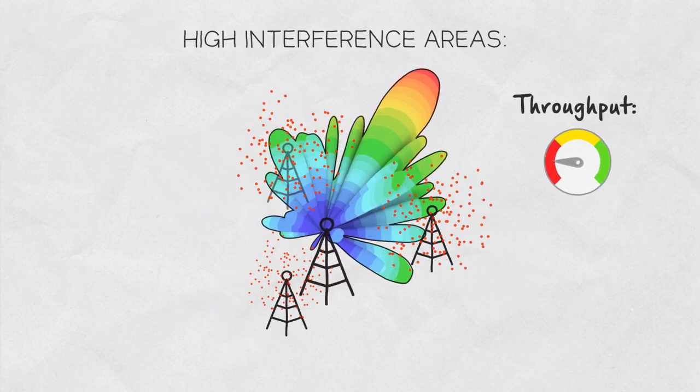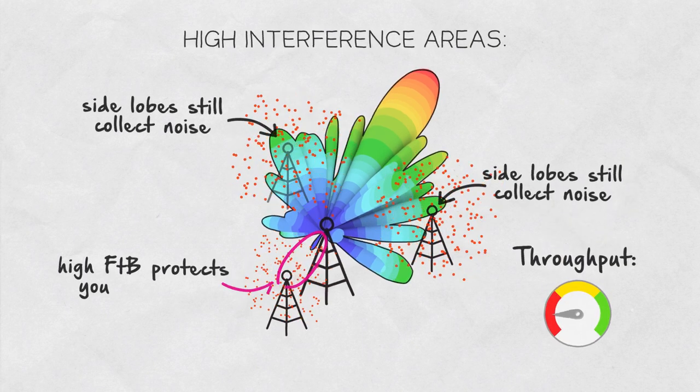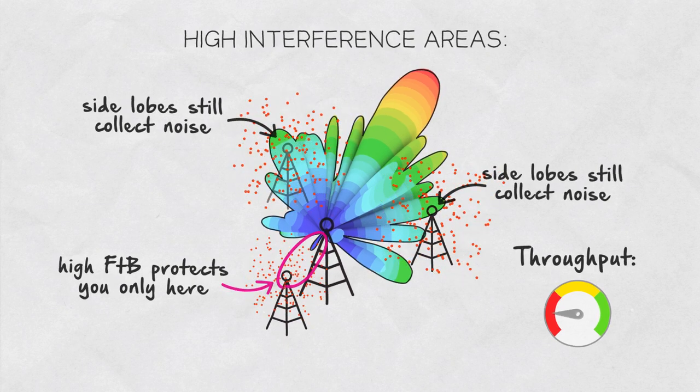In high interference areas, front-to-back ratio is also irrelevant. This is because the rest of the side lobes still collect the interference, harming a wireless network by increasing the noise floor the radio is working with.